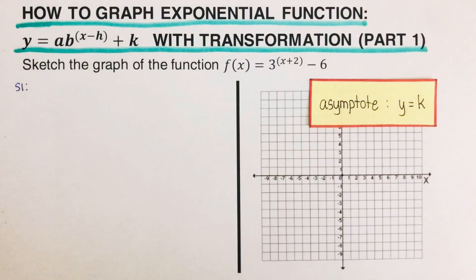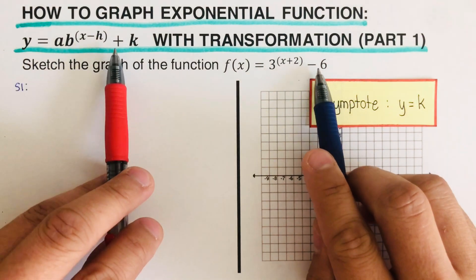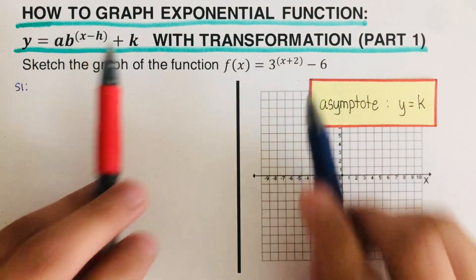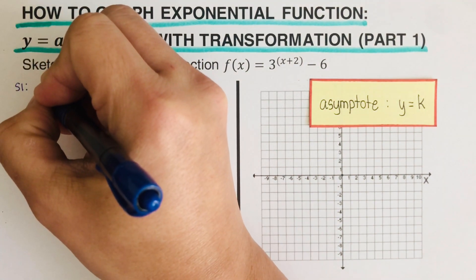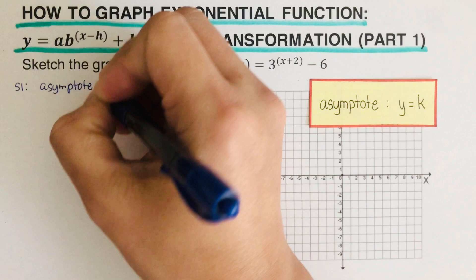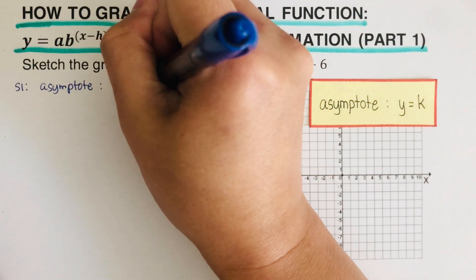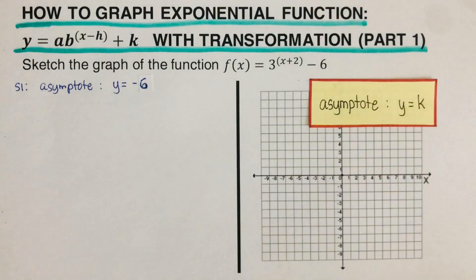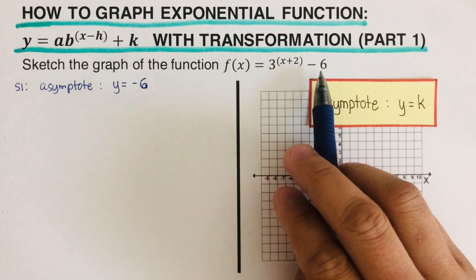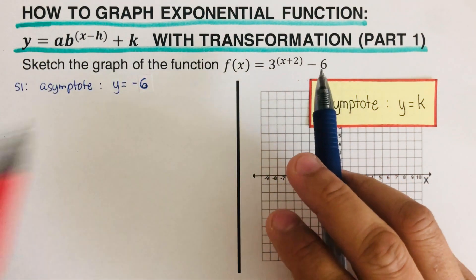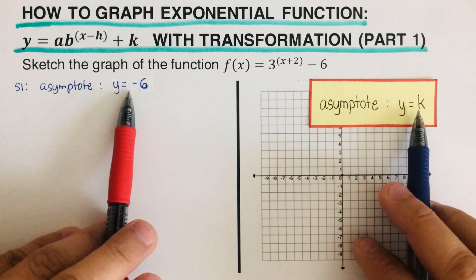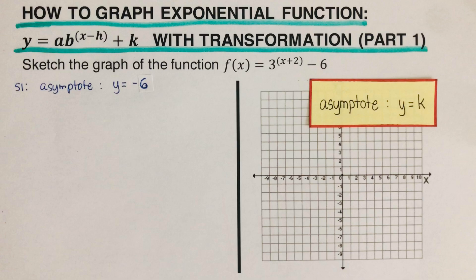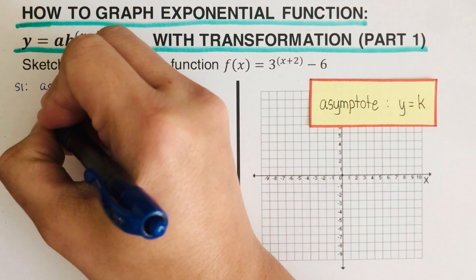In this problem, k matches up with negative six, so that represents our asymptote. We go ahead and write the equation of the asymptote: y is equal to negative six, because that is the value for k.